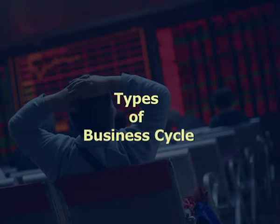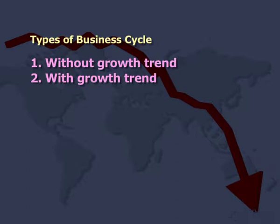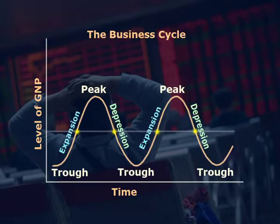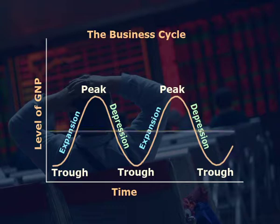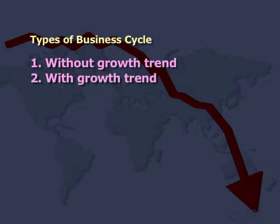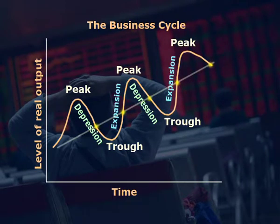Now let us understand the types of business cycle. There are two types: without growth trend and with growth trend. Without growth trend shows fluctuations occurring but the equilibrium remains stable — that is, the level of GNP remains stable as time passes. With growth trend shows fluctuations occurring and equilibrium does not remain the same; it moves up, which shows growth in GNP. This happens due to various reasons according to J.R. Hicks, like autonomous investment due to growth in population and technological progress.